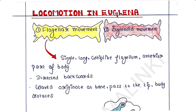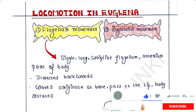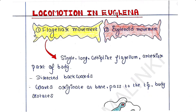Hey guys, this is Malinky, welcome back to my channel Voice of Malinky. Today we will talk about locomotion in Euglena. There are two methods of locomotion in Euglena: first is flagellar movement and euglenoid movement.